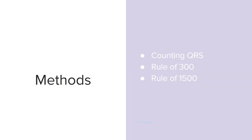There are three methods to counting on an EKG strip: counting the QRS, the rule of 300, and the rule of 1500.